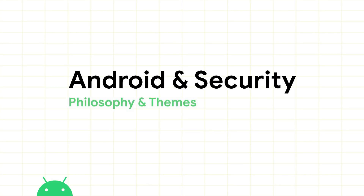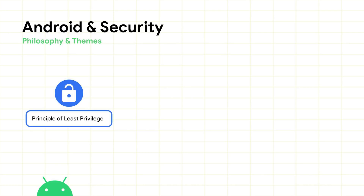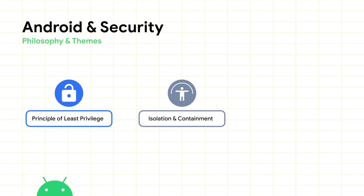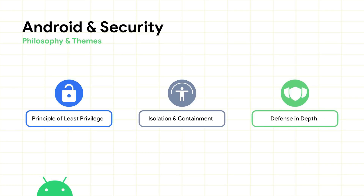Security means different things to different people. For us in the Android team, we look at security as the careful software engineering discipline necessary to keep our users, their devices, and their data safe from accidental or intentional abuse from bad actors. Our security approach is built on three pillars: one, principle of least privilege; number two, isolation and containment; and three, defense in depth.